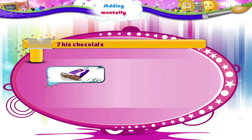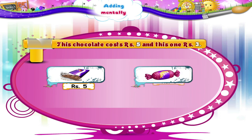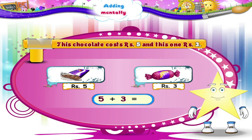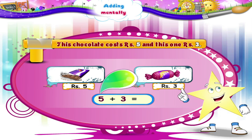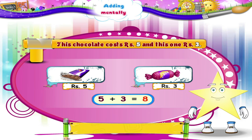This chocolate costs rupees 5, and this one rupees 3. So 5 plus 3 is... Count 3 numbers ahead from 5, Starry. Yes — 6, 7, 8. You have paid rupees 8 for these chocolates, right?